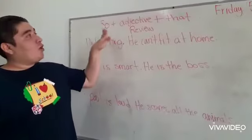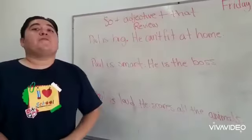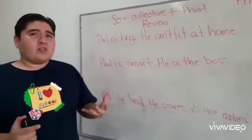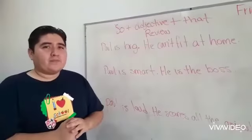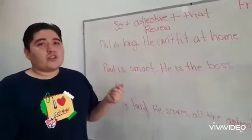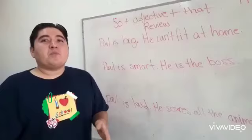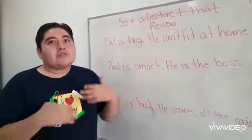Today we're going to see the 'so + adjective + that' structure. Do you remember why we use this structure? When we use the structure, it's to give the consequence of someone being so something.